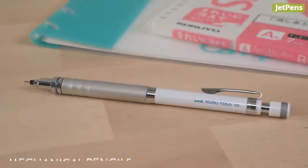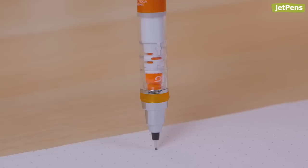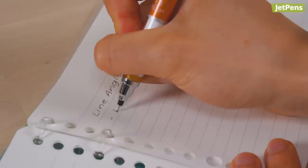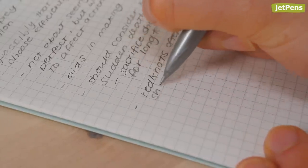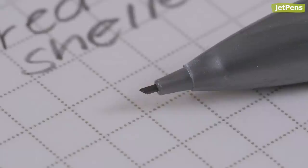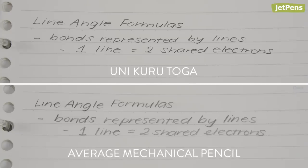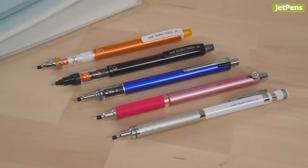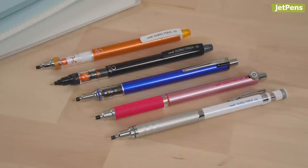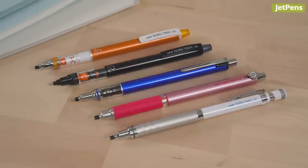The innovative Uni Kuru Toga automatically rotates its lead as you write, ensuring fine, consistent lines. With normal pencils, the lead wears down on one side, forming a slanted, wedge-shaped tip that's prone to breaking and creating smudgy, unsightly lines. The Kuru Toga is available in several different models, each with its own perks. Make sure to check out our comprehensive guide on the Kuru Toga in the card above.